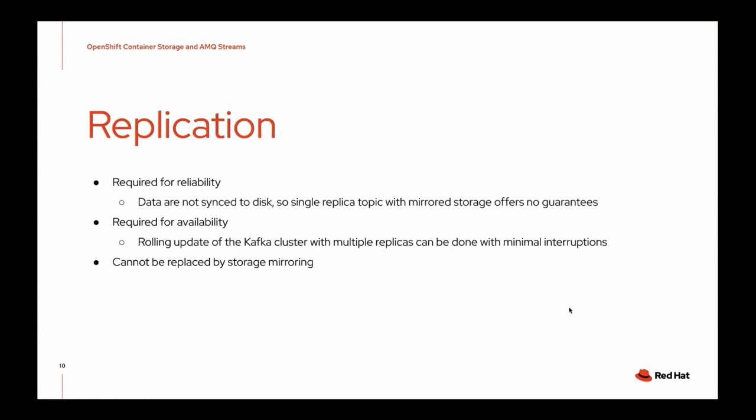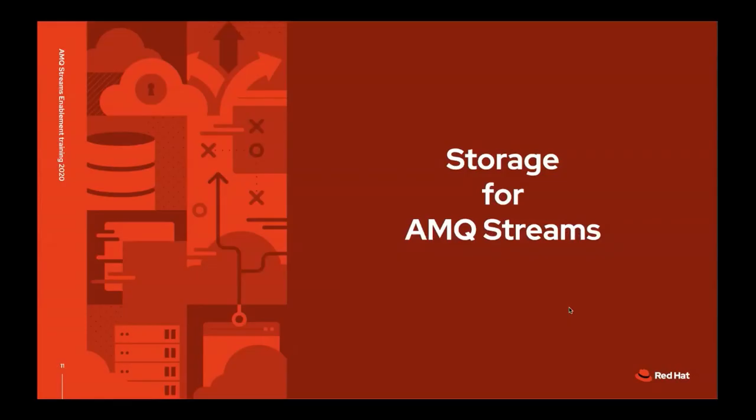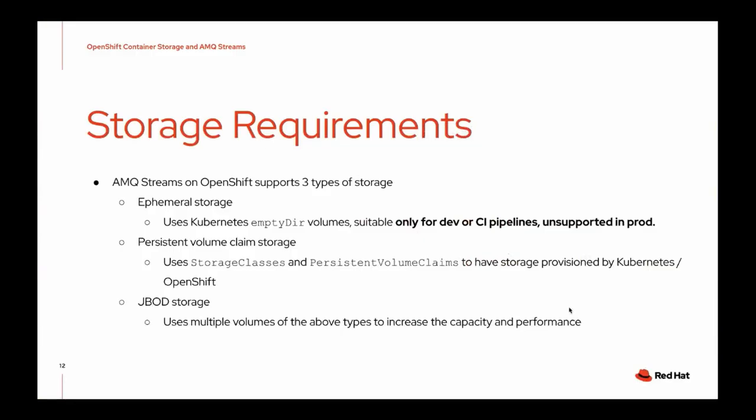Replication is really important for Kafka and cannot be fully replaced by mirroring at the storage level. Having multiple active replicas available with the same data means availability is great and failover is fast. It's also important for reliability that data is written to multiple disks on multiple brokers. However, storage mirroring can still help with other things.